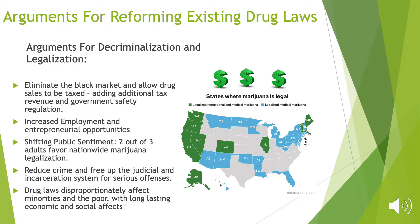The arguments for reforming existing drug laws: by legalizing drugs, society stands a much better chance of eliminating the black market drug trade. This would create a federally regulated market that would provide much better assurance of safe products and allow the government to collect tax revenue from drug sales, which would go towards addiction treatment, education, and other societal needs. According to Gallup, two-thirds of adults currently favor legalization of marijuana for recreational use. Additionally, legalizing drugs would reduce crime, free up police and courts to pursue more serious offenses, and eliminate the pathway that disproportionately brings African Americans and poor people into contact with the criminal justice system.